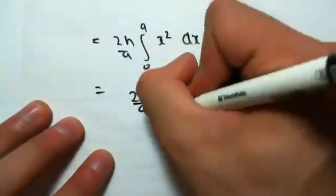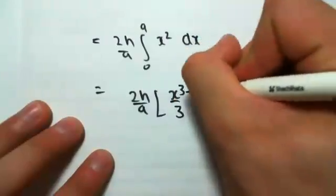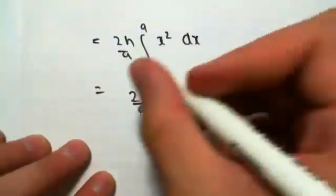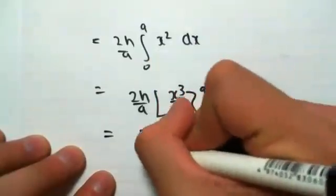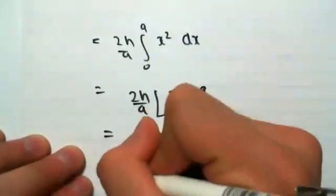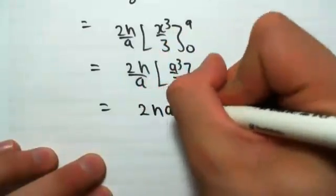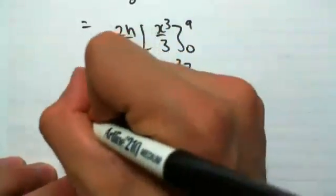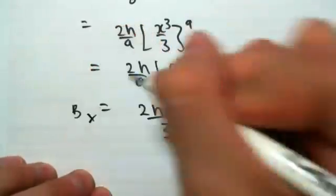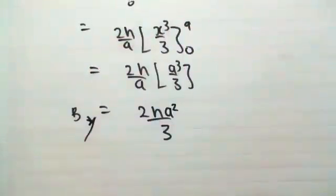Integrating this, we have 2h on a, x cubed on 3, 0 to a. Substituting in for a, we'd have 2h on a, a cubed on 3. This would give us a final answer of 2h a squared on 3. So there we have found by, okay?